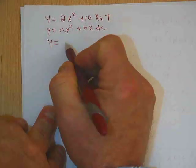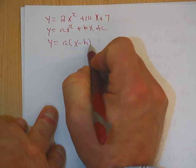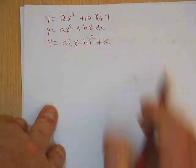Vertex form looks like y equals a times x minus h quantity squared plus k.